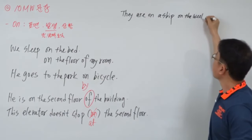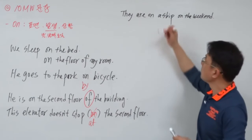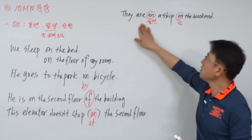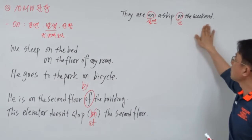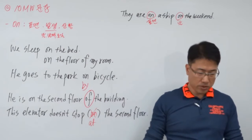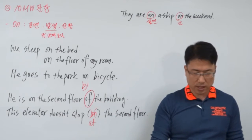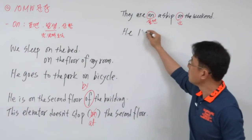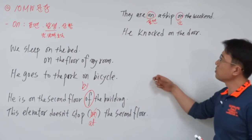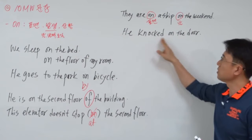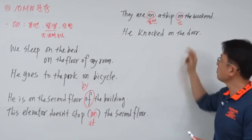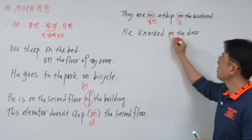On the weekend — 표면이란 뜻이고요, 얘는 당연히 날이죠, 날짜. 발생 이런 뜻이죠. 그들이 배의 표면에 있고, 날은 주말이다. 주말에는 배 탄다 뭐 그런 뜻으로 이해하시면 되겠습니다. On the door — 표면인데 문 표면입니다. He knocked on the door — 그가 문을 두들겼다. Knock한다는 표현을 할 때는 knock을 표면에 똑똑똑 두들기죠. 그래서 knock on을 쓰셔야 돼요. Knock on — 표면을 두들기는 거고 문의 표면이니까 on을 쓰는 거죠.